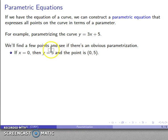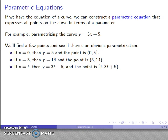Let's see, if x equals 0, y equals 5, and the point that I have is 0, 5. If x equals 3, y equals 14, and I have my point 3, 14. And let's introduce our parameter. If x equals t, then y is 3t plus 5. And so my point is t, 3t plus 5, and that suggests I have the parameterization t, 3t plus 5, where t is our x value, can be any real number. And so there's my parametric equation for the curve y equals 3x plus 5.